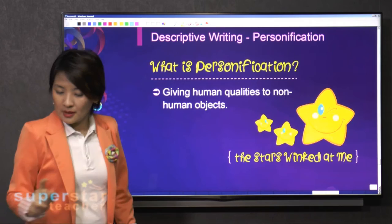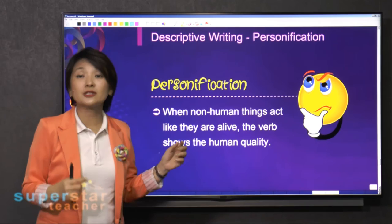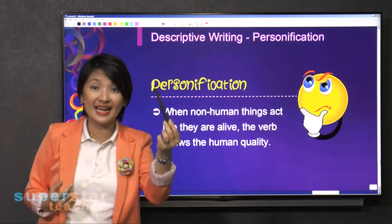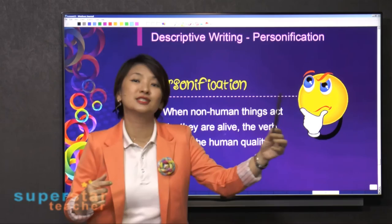When non-human things act like they are alive, the verb shows the human quality. For example, in the last lesson I talked about the pen dancing. When he was very confident in his exam, his pen was dancing from question to question, as though the writer has no control over the pen and the pen is the one doing the exam.